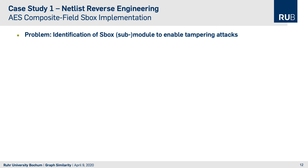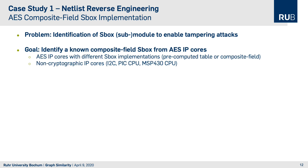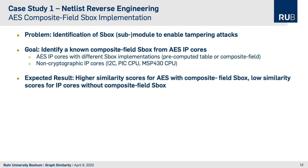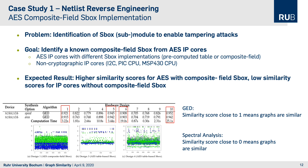Our first case study handles the identification of possible attack vectors in a larger design. As an example, we try to find non-composite field S-boxes from an AES IP core in a design, which may later be used to modify the S-box and deplete the security of the design. We use AES IP cores with different S-box implementations — either pre-computed table or composite field — plus non-cryptographic IP cores to verify our analysis. The expected result is higher similarity scores for AES with composite field S-boxes and lower scores for IP cores without them. Our results performed best using the graph edit distance implementation.